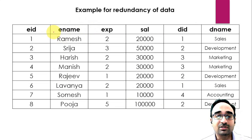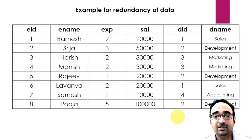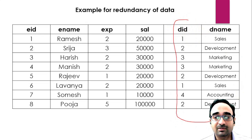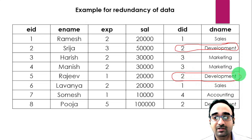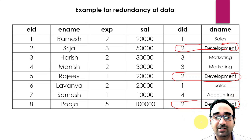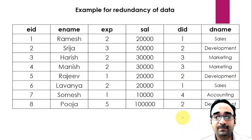Take some time and look at the data in this table. If you focus on the last two columns, there is some redundancy. You can see department ID 2 maps to 'development' and the same data repeats three times. That is the problem we are going to discuss now.